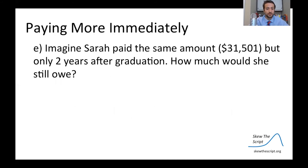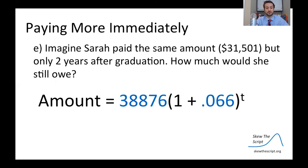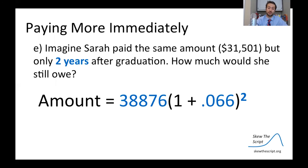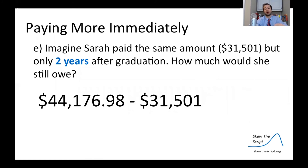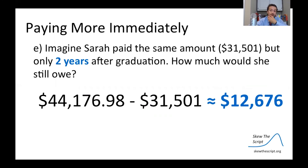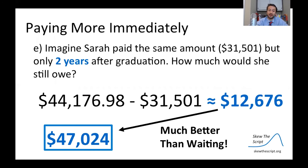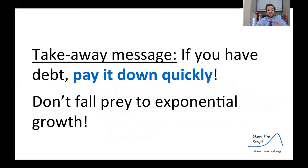If Sarah were able to pay more immediately — obviously a tall task — say $31,500 only two years after graduation, how much would she still owe? Using our formula with a principal of $39,000, interest rate 6.6%, and plugging in two years, that comes out to about $44,000. After paying off $31,500, she would still have $12,000 left — a big amount, but much better than waiting 11 years and having to pay $47,000. So the takeaway message is: if you have debt, pay it down quickly. Don't fall prey to exponential growth, because there are plenty of difficult situations like the one you've seen here.